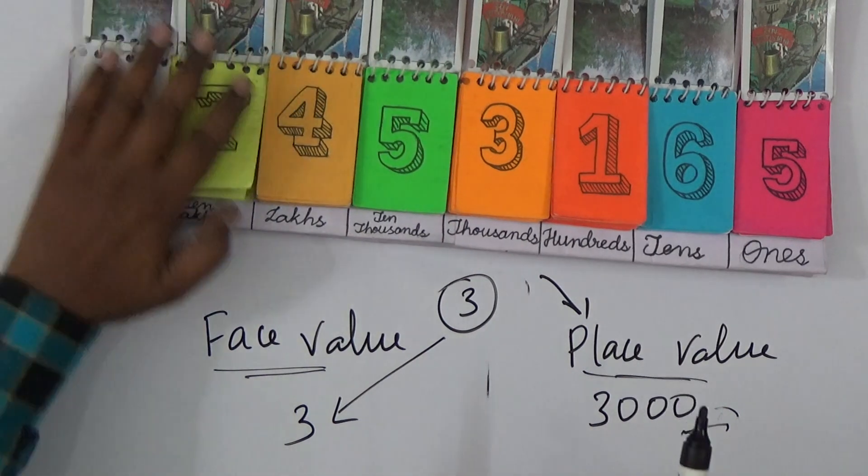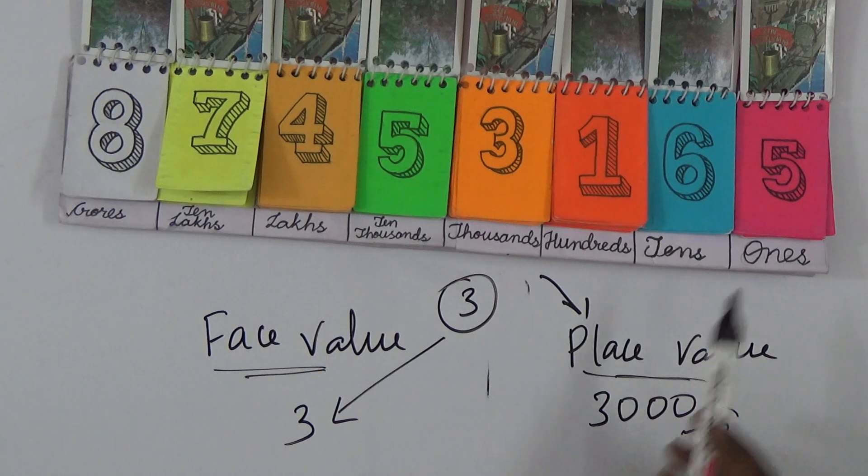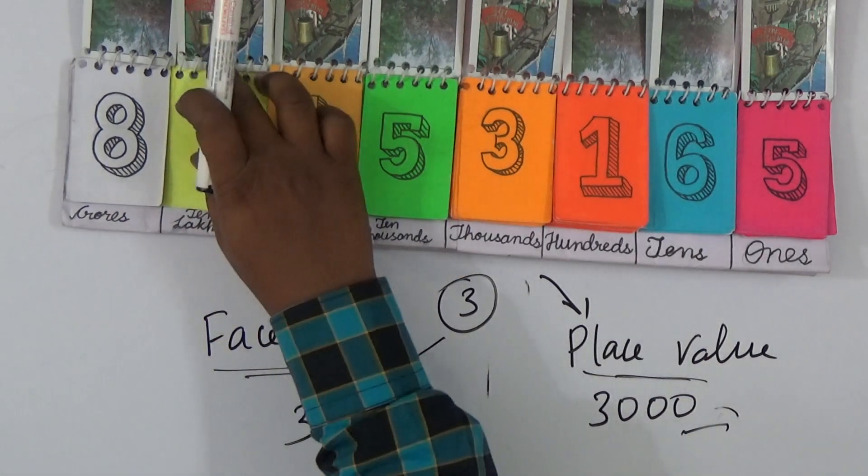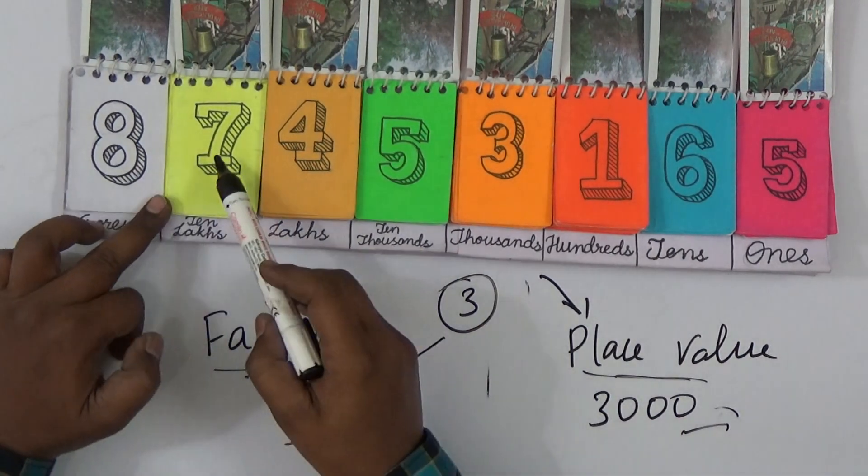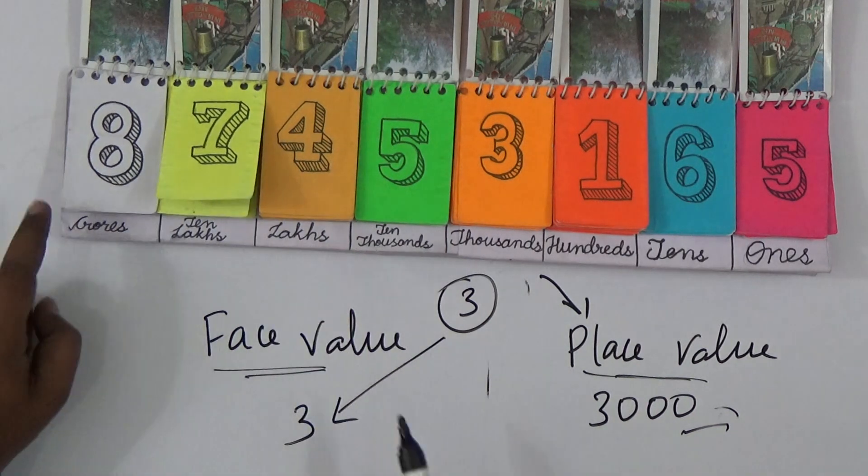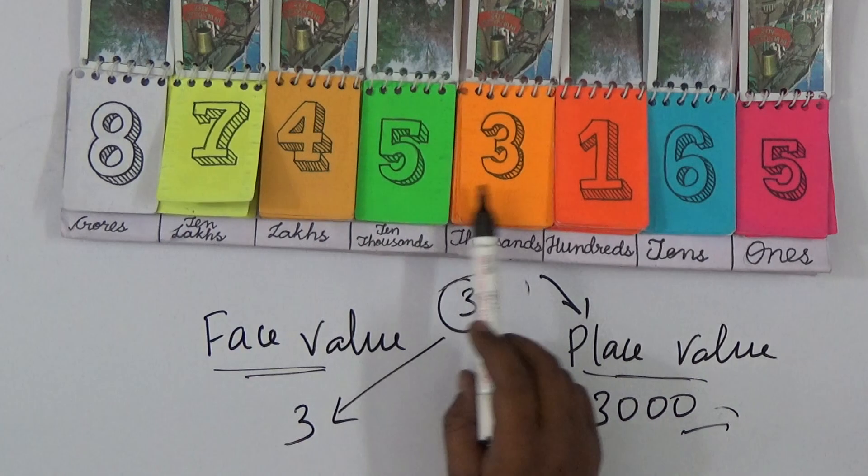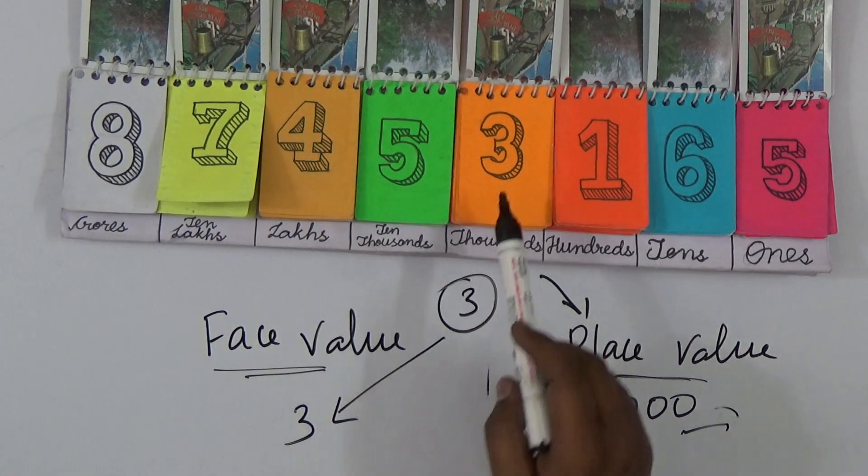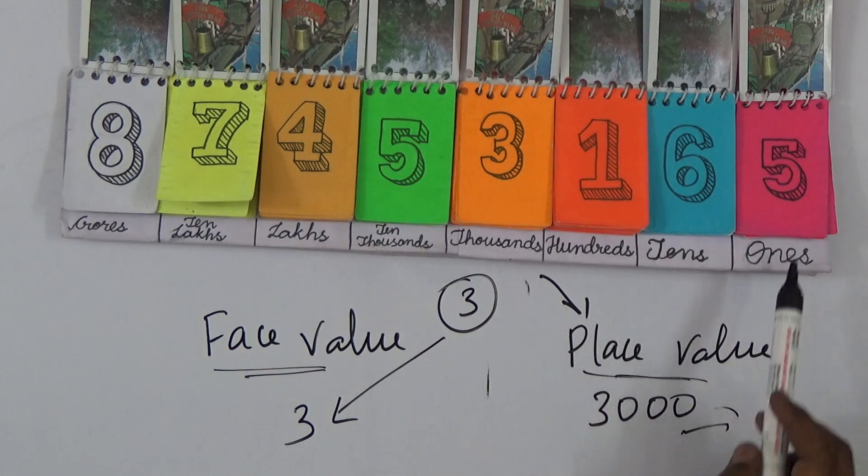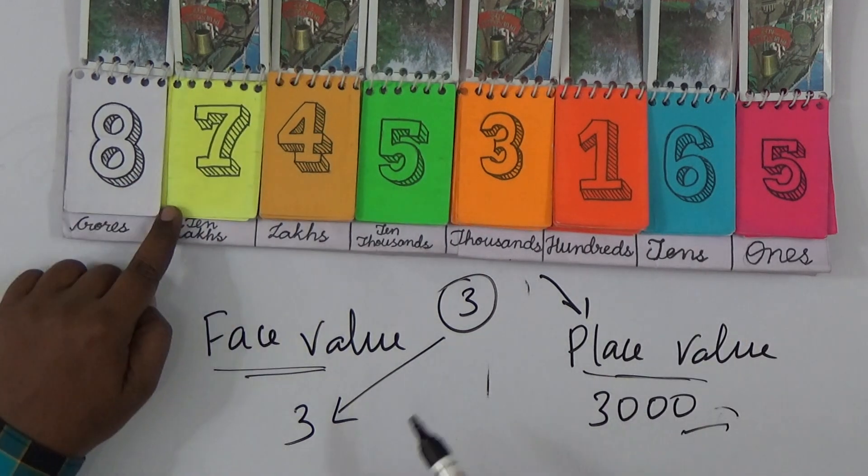Now see here this is the number - it's very easy to read: ones, tens, hundreds, thousands, ten thousands, lakhs, ten lakhs, and crores. This is seven tens and four ones in lakhs, so seventy four lakhs, that means 8 crore 74 lakhs. And these both are thousands - this is five ten thousands and three thousands, so fifty three thousand, one hundred and sixty five.